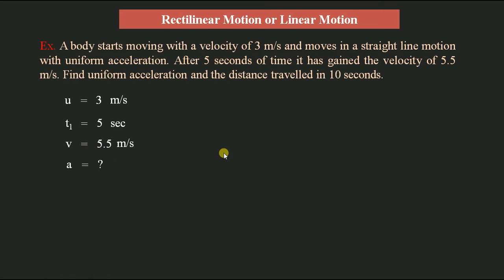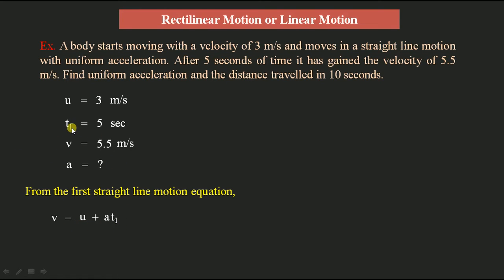First we need to find the uniform acceleration. Acceleration can be determined from the first equation of rectilinear motion: v = u + at. Since time is t1, we write it as v = u + a·t1. The final velocity v is 5.5 m/s, so we write: 5.5 = u + a·t1.